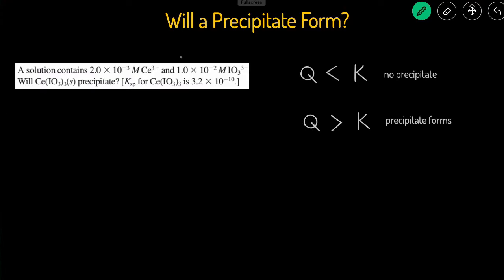The way to determine if a precipitate forms or not is to calculate the Qsp and then compare it to the Ksp. If Q is less than K, the precipitate will not form, and if Q is greater than K, then the precipitate does form.